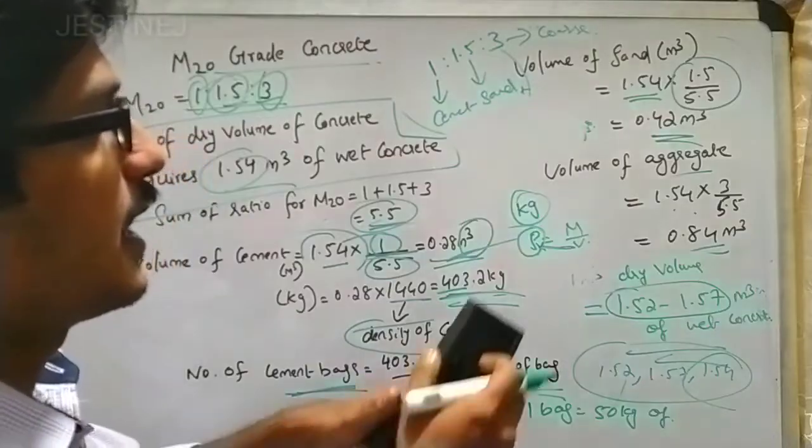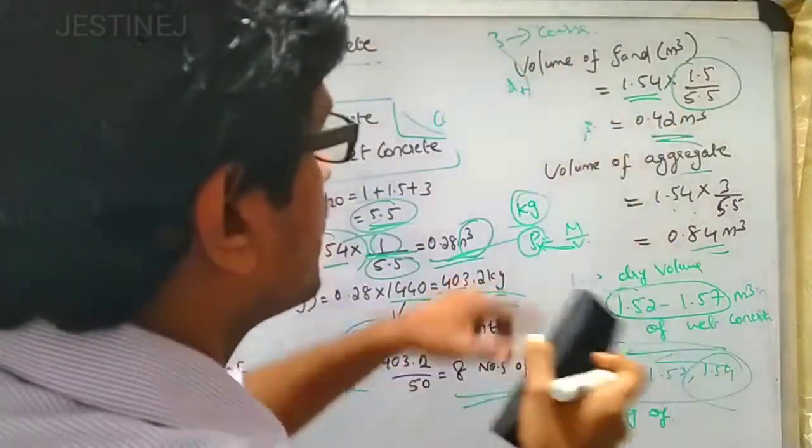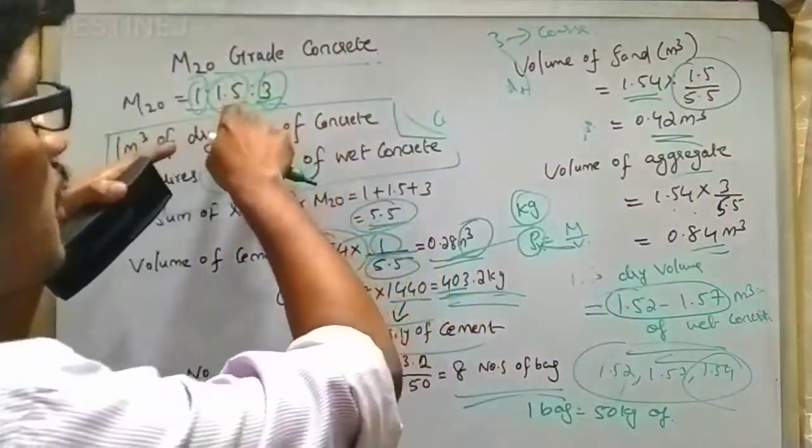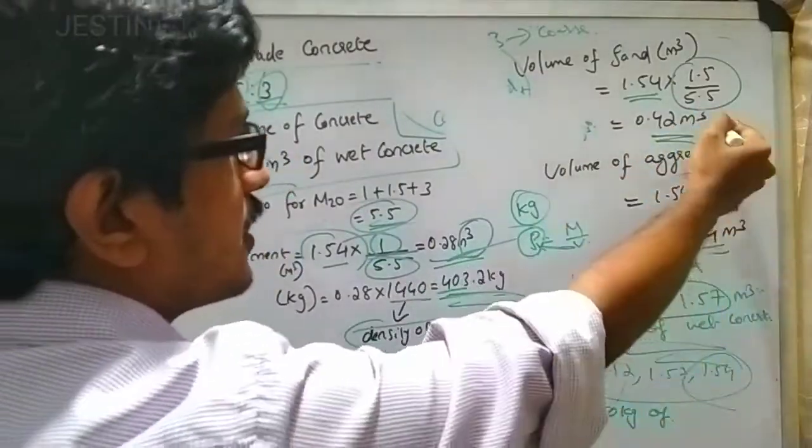Similarly, you can calculate the volume of sand in cubic meters, which is 1.54 multiplied by 1.5 divided by the total sum of the ratio, 5.5, and you will get 0.42 cubic meters.